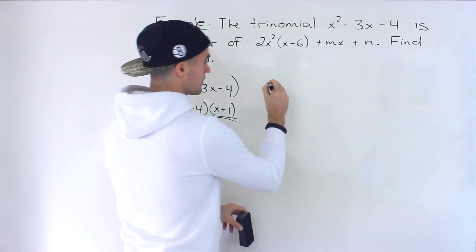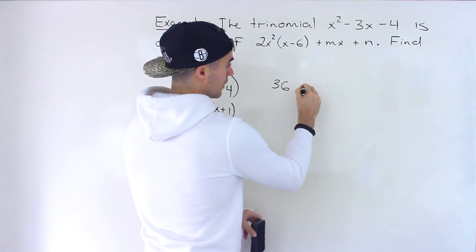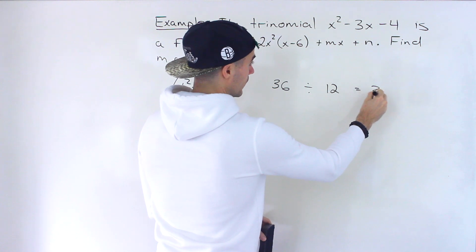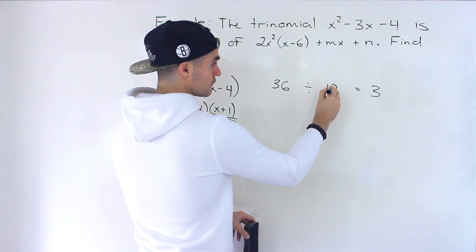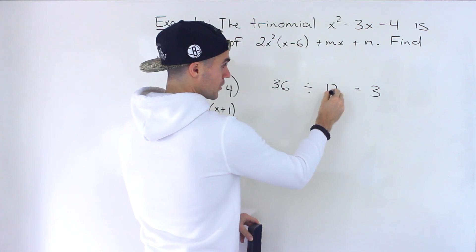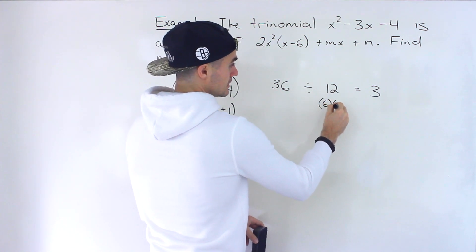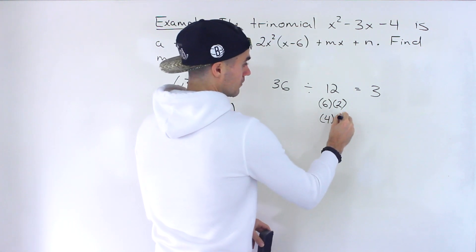So for example let's say we took 36. A factor of 36 is 12. If we divide this by 12 we end up with 3. Well 12, notice that we can break that down into for example 6 and 2 or 4 and 3. Well if 12 is a factor of 36 then if we can break that down into factors.